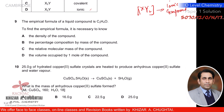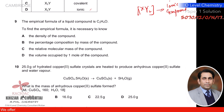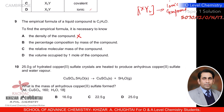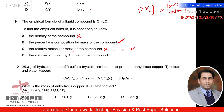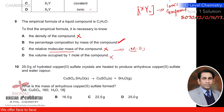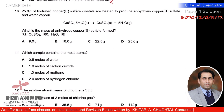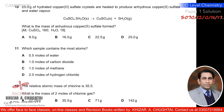Question nine: the empirical formula of a liquid compound is C₂H₄O. To find the empirical formula, what is necessary? The density — no. Percentage composition by mass — yes. Relative molecular mass — no, that is needed for the molecular formula, not the empirical formula. Volume occupied by one mole of gaseous compound — no. So B is the correct option.